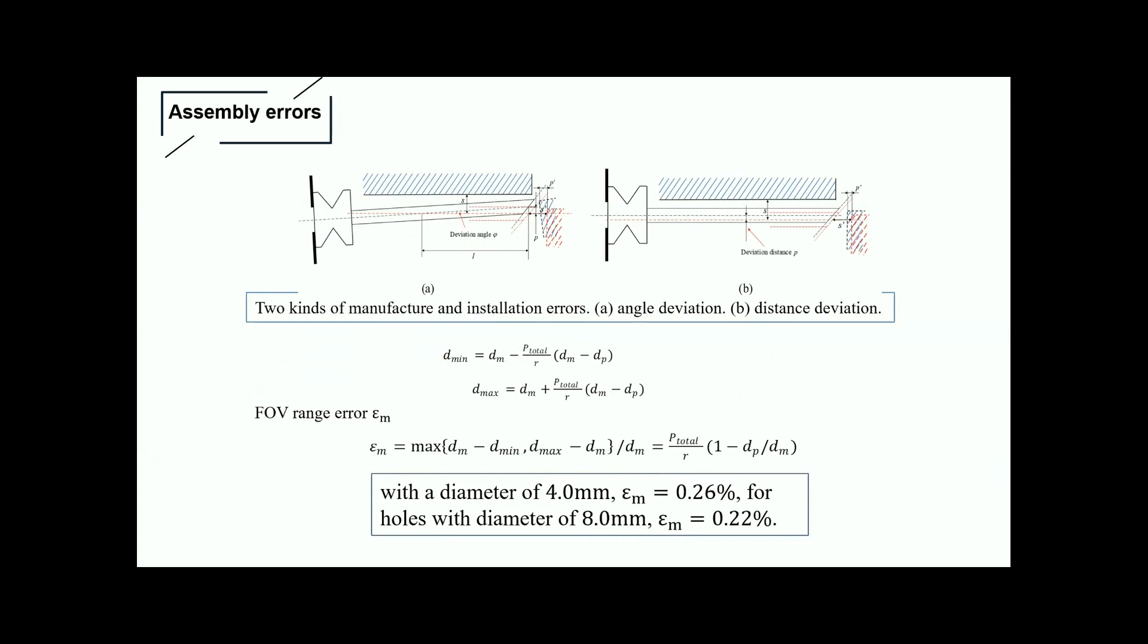and distance deviation, as shown in the picture. It can be calculated that for holes with a diameter of 4 mm, the field of view range error can be equal to 0.26%. For holes of 8 mm, it can be 0.22%. Therefore, the influence of the manufacturing error and installation error can be neglected.